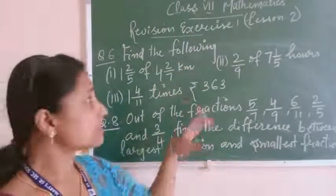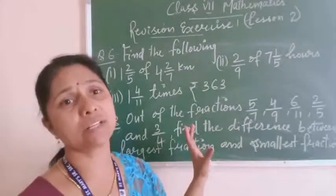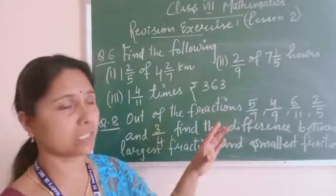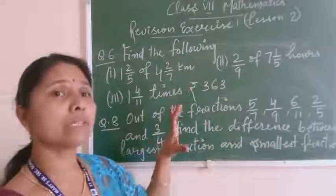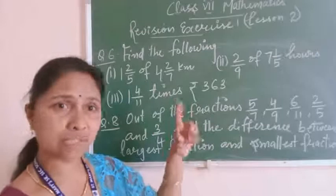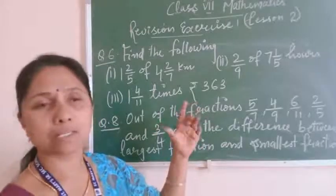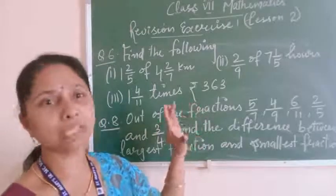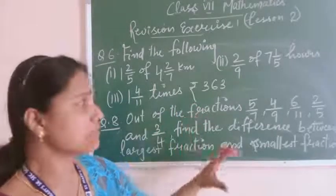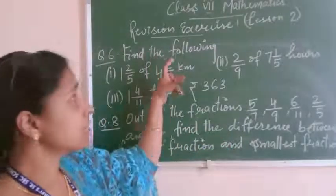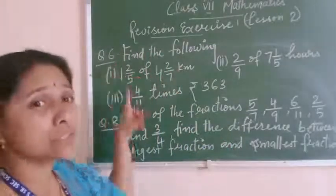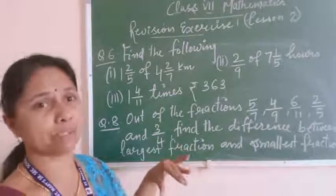In that revision exercise, total 9 questions are given. Out of those 9 questions, the first 5 questions are given from lesson 1, that is from Sets, and from lesson 2, which is Integers — both chapters we did not complete. That is why, from the fraction chapter, question number 6 — what are those questions given from the fraction chapter?